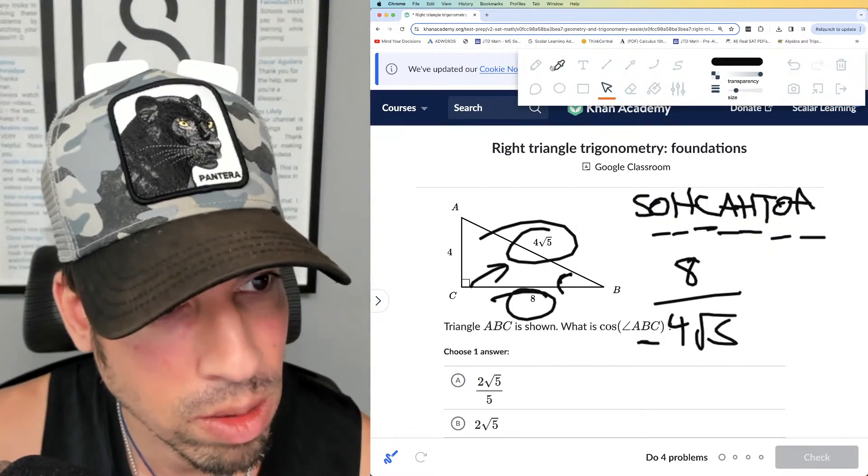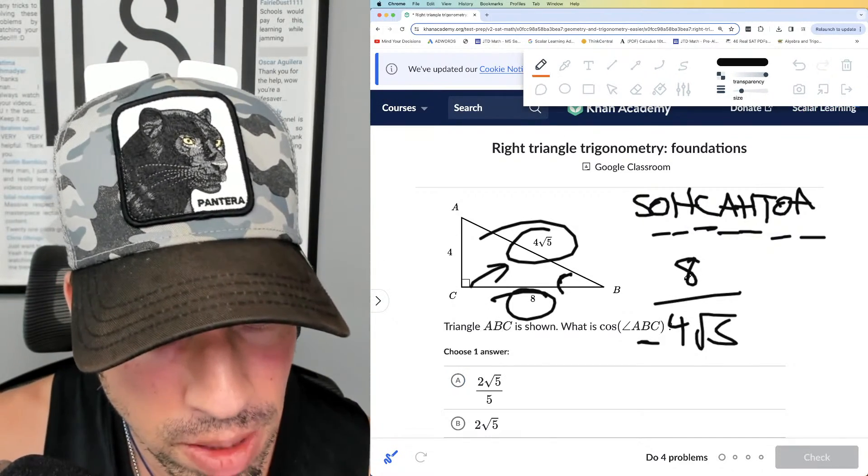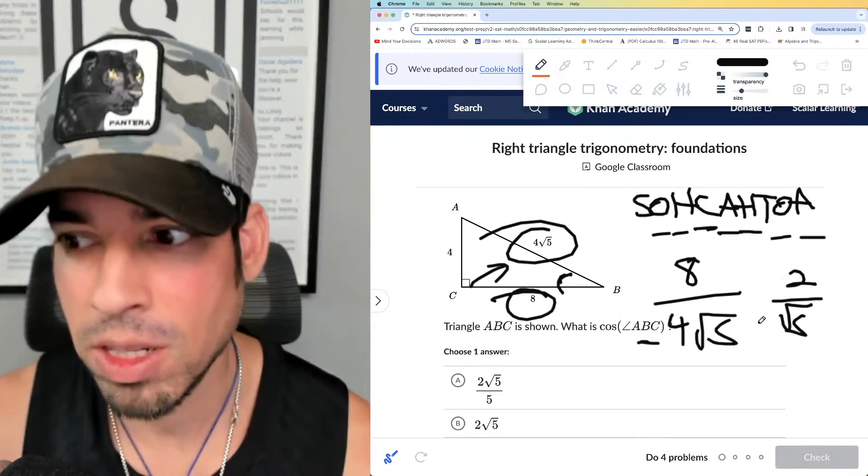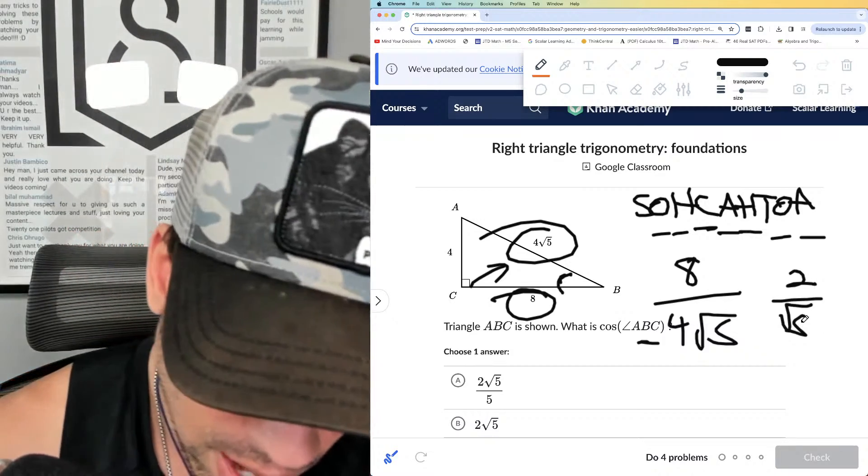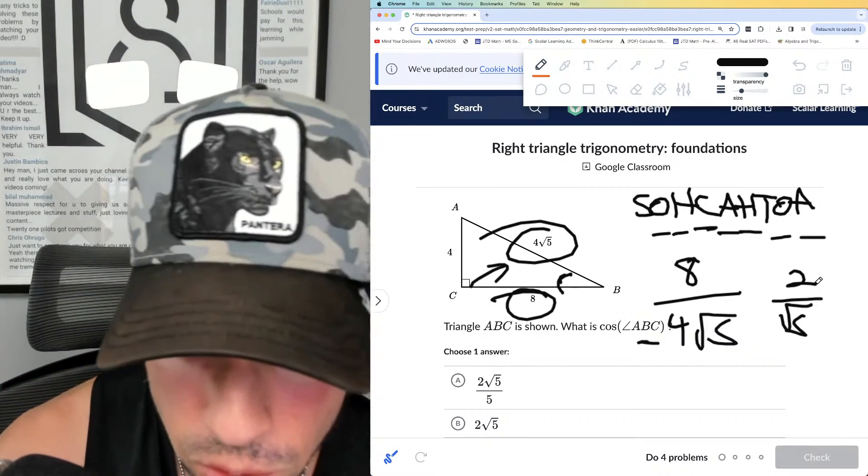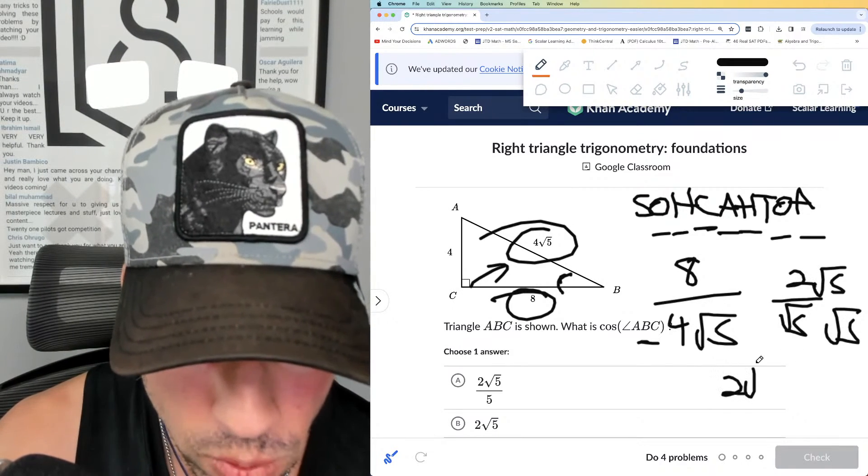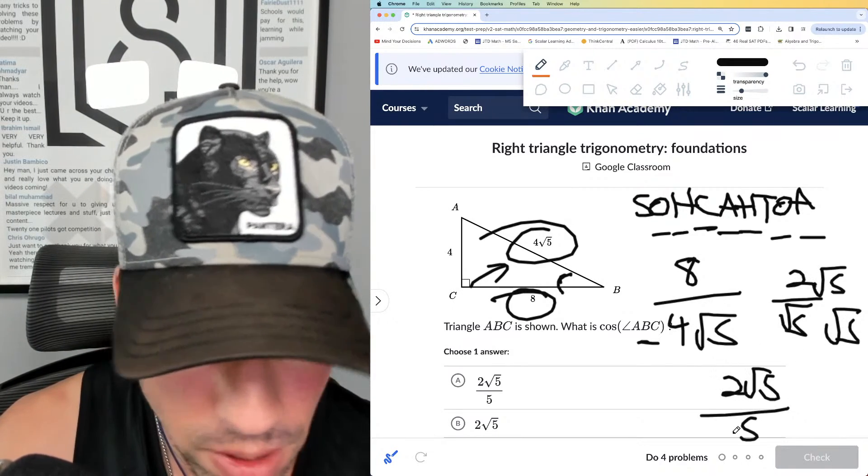What do they do? They simplified it, right. 8 divided by 4 is 2, so we got 2√5. But they don't even have this, right. What do they do? They rationalized the denominator. We don't like to have a radical in the denominator, so what we do is we multiply by itself—√5 over √5—and then we get 2√5, and √5 times itself is just 5. And there we go, option A is the winner. Boom, done.